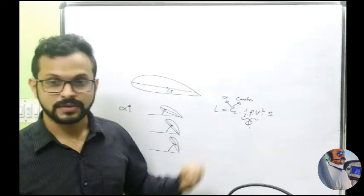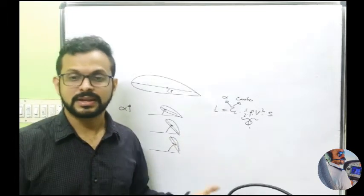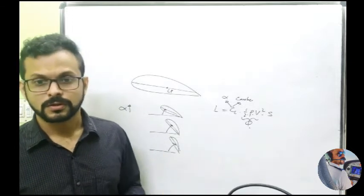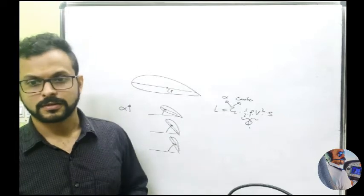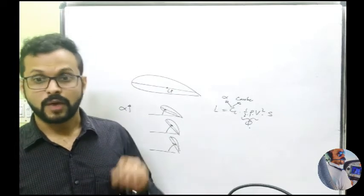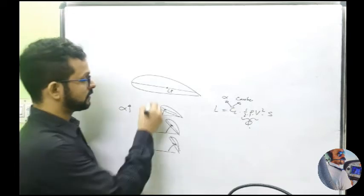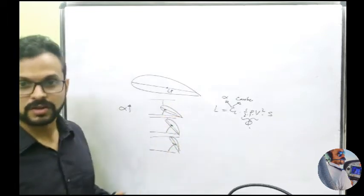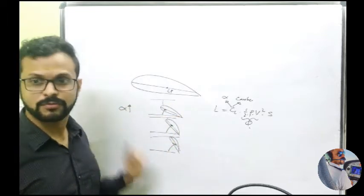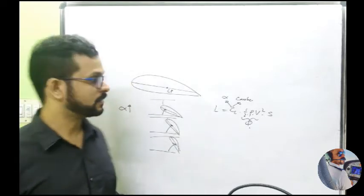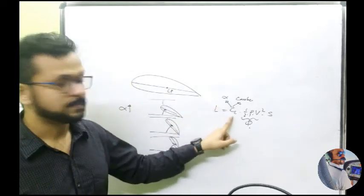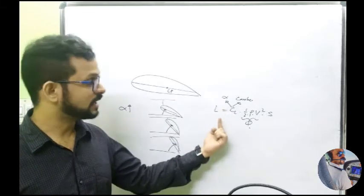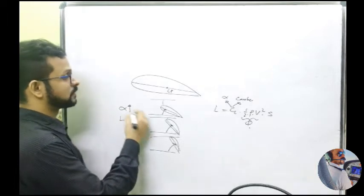So when you increase the angle of attack, you are basically increasing the capacity or ability of your aerofoil to produce lift, and therefore it is going to produce more lift. We have already seen that with the boundary layer — as the angle of attack increases, the area of cross section reduces, equation of continuity applies, static pressure drops, and you have more force. So when you increase the angle of attack, the coefficient of lift — the capacity of the wing to produce lift — increases, and therefore lift is going to increase.